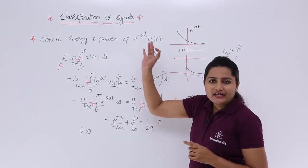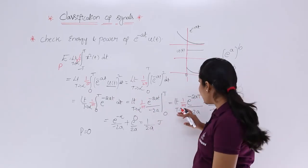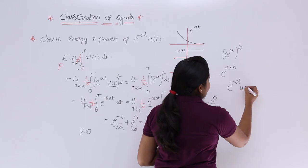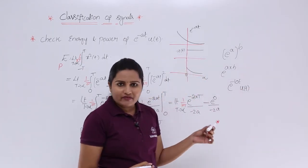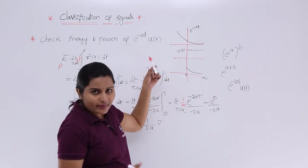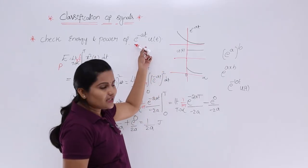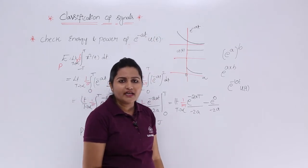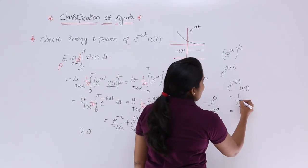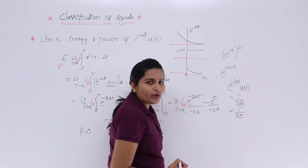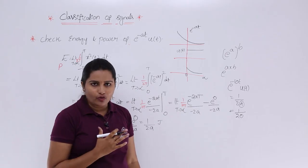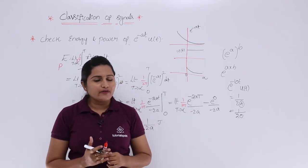All e^(-aT)u(T) signals are energy signals with energy 1/(2A) joules. As a gate shortcut: if a signal is given as e^(-10T)u(T), that is definitely an energy signal. The energy is 1/(2A) — substituting A = 10 gives 1/20 joules. Similarly for e^(-20T)u(T) and others. This is how you calculate the energy and power of an exponential signal.